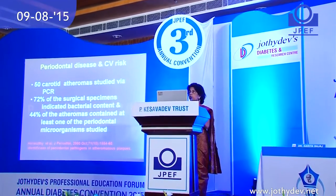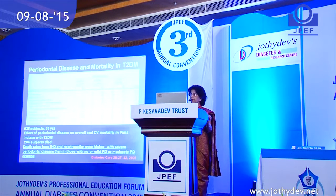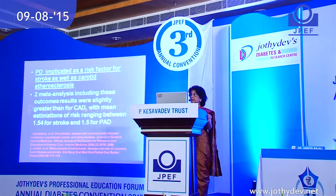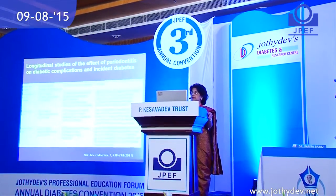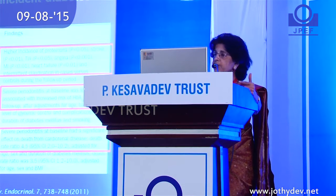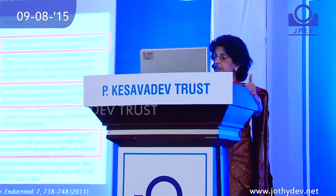Regarding mortality, data from Pima Indians demonstrated that death rates from ischemic heart disease and nephropathy were higher with severe periodontal disease than in those with none, mild, or moderate disease. Periodontal disease may contribute to increased mortality associated with diabetes. It is also associated as a risk factor for stroke and carotid atherosclerosis. In summary, studies show higher chances of proteinuria, a greater HbA1c, significant effect on death from cardiorenal disease, and a significant association between severe periodontitis and incident diabetes mellitus.